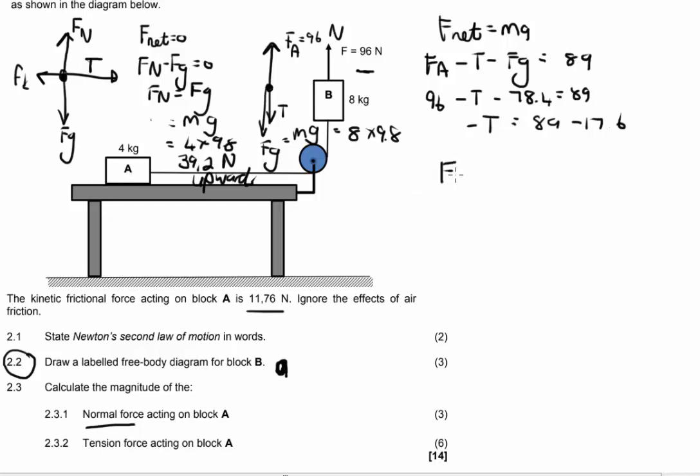For block A, F net also equals MA, and now remember in the horizontal there is going to be a net force, therefore Newton's second law applies. F net is now no longer equal to 0. And here I am going to have, if I say to the right is positive, T minus Fk, my frictional force equals 4A. I know that my frictional force is 11.76 Newton, it was given, so T minus 11.76 is going to be equal to 4A. T therefore equals 4A plus 11.76.